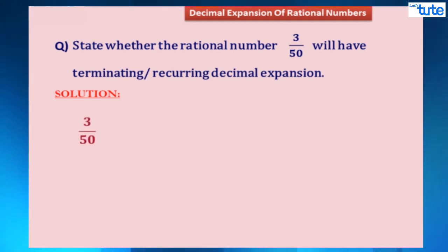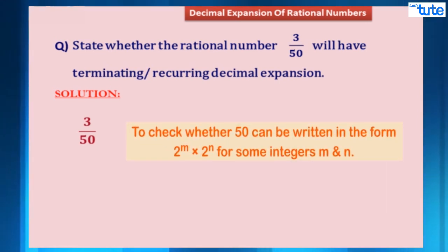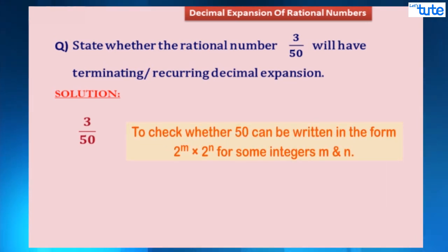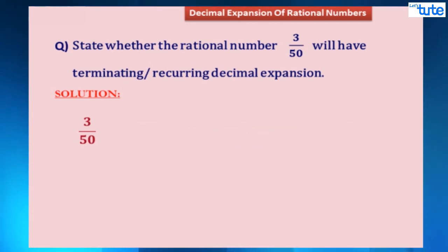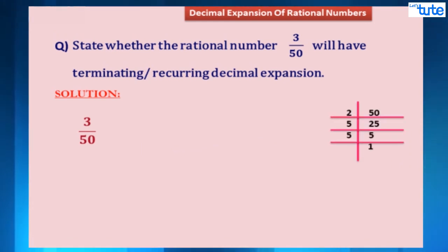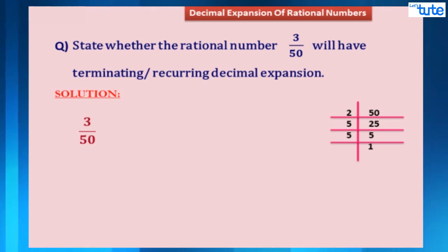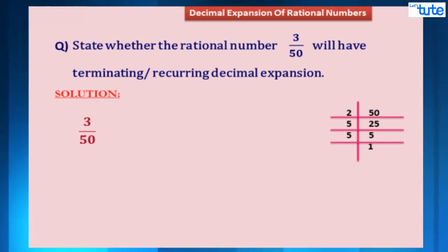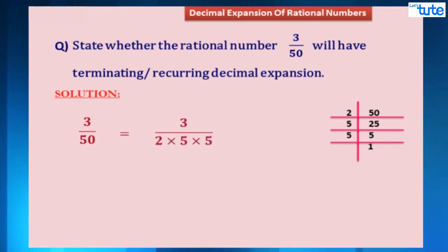Consider the fraction 3 upon 50. Since our task is to check whether the denominator 50 is of the form 2 raised to m into 5 raised to n, we will first factorize 50. We get 50 as 2 into 5 into 5.